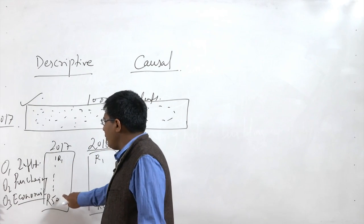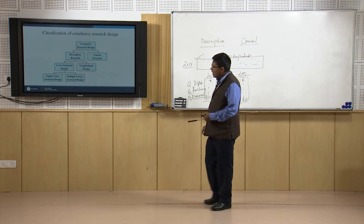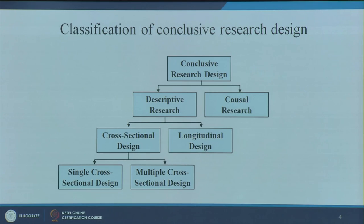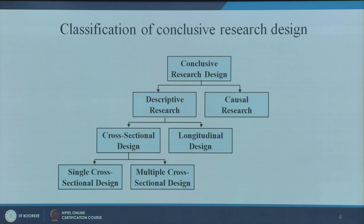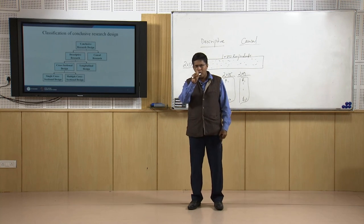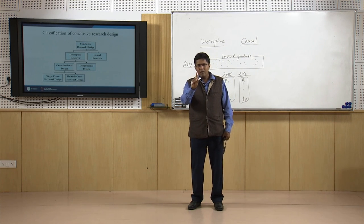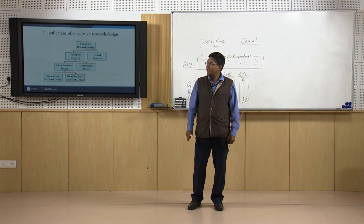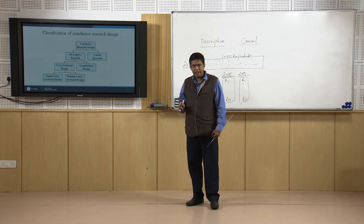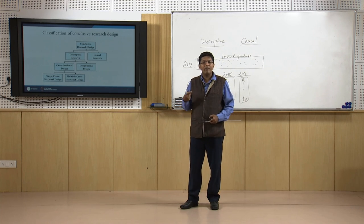The respondents must remain the same in a longitudinal design across all time periods. Cross-sectional design is further divided into two types: single cross-sectional design, where one group of respondents provides data once, and multiple cross-sectional design, where there are two or more groups of respondents and data may be collected from each group.